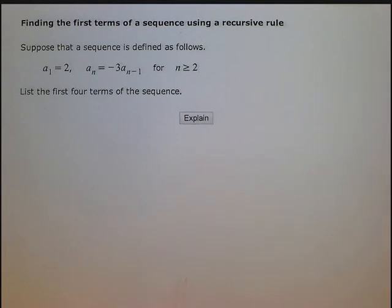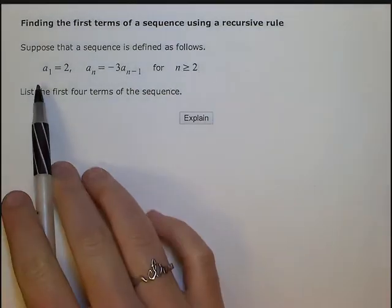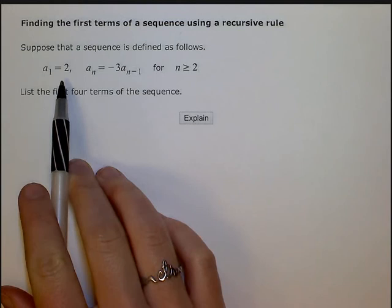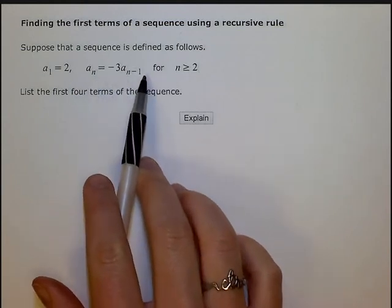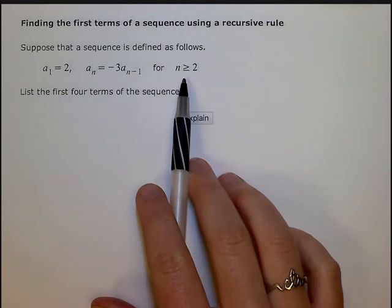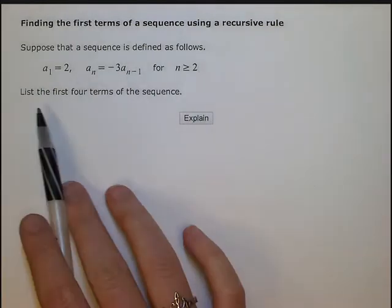Finding the first terms of a sequence using a recursive rule. Suppose that a sequence is defined as follows: a sub 1 equals 2 and a sub n equals negative 3 times a sub n minus 1 for all n greater than or equal to 2. List the first four terms of the sequence.